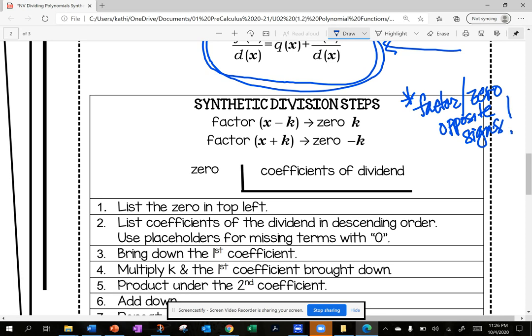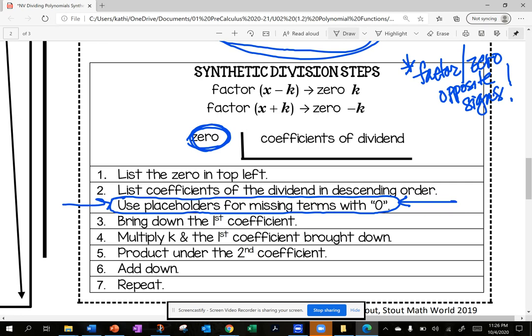We set this up as an L. In the L, I need the zero, not the factor, and these are the coefficients of the dividend. List the zero on the top left. List the coefficients of the dividend in descending order, and use placeholders for missing terms with a 0. I see a lot of students miss this. Bring down the first coefficient, multiply k times the first coefficient, put the product under the second coefficient, add down, and repeat.